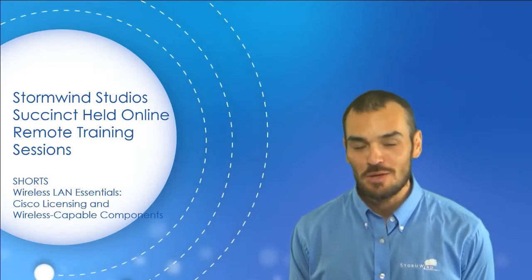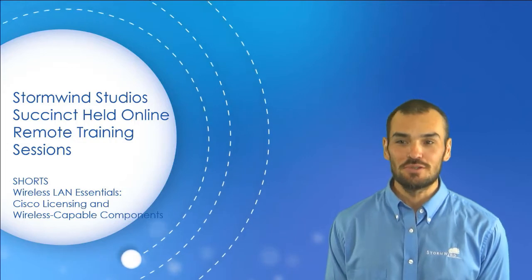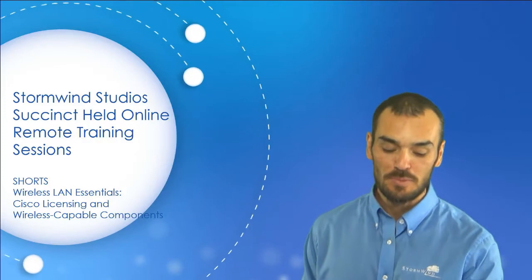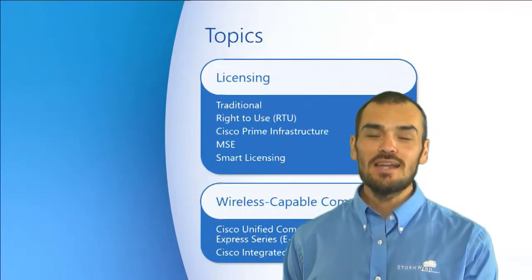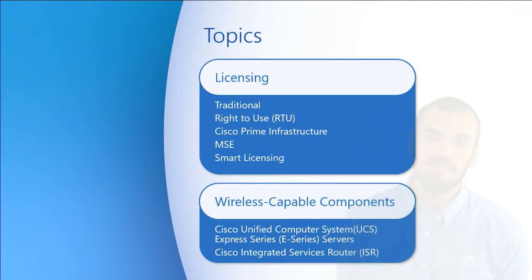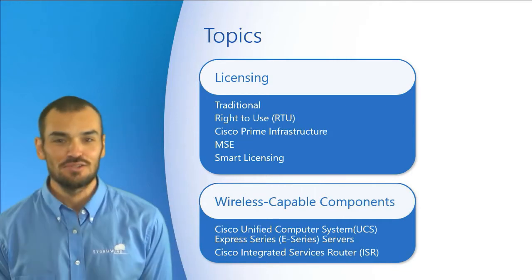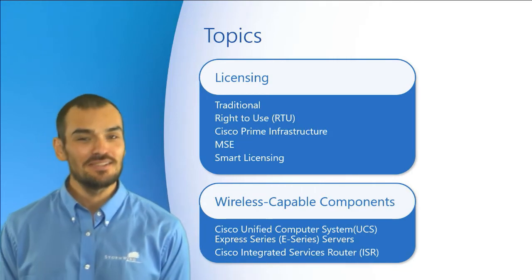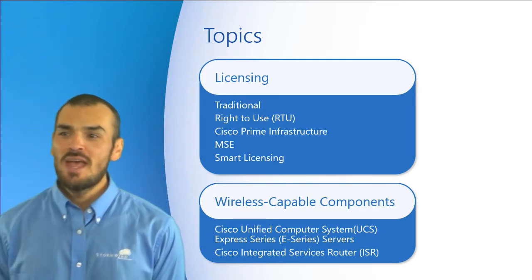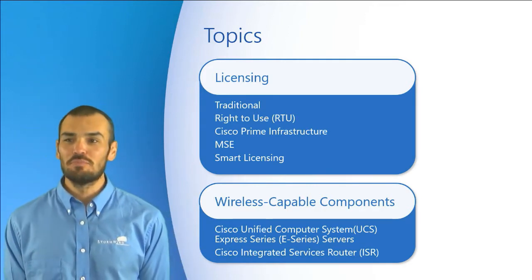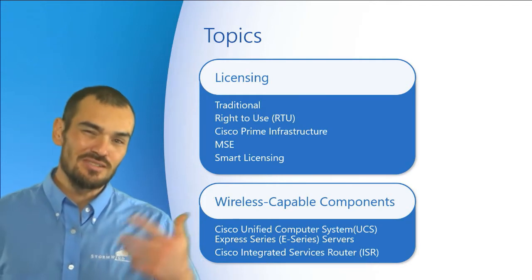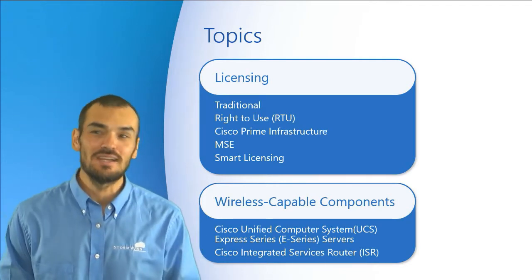This is technically the 12th short in the Wireless LAN Essentials series of shorts, focusing on Cisco licensing and some of our wireless capable components. We kind of lump these two together because this is yet another Cisco infomercial — we want to make sure that we discuss the licensing options at our disposal as well as some of the wireless capable components.